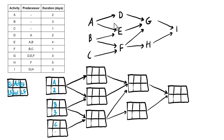Now we're going to do the forward pass. We start with the early start of all beginning or initial activities, and they're all going to be zero. So for A, B, and C, each of those will start at zero because they have nothing coming before them. After that, we just add the durations: zero plus two is two, zero plus three is three, and zero plus one is one.